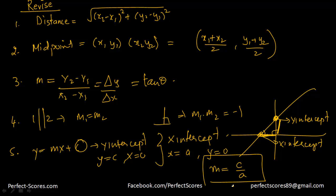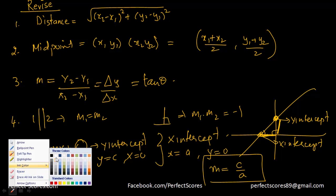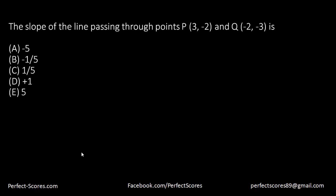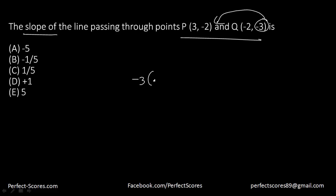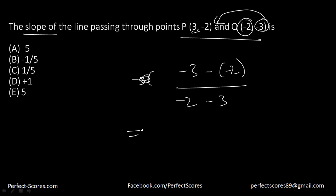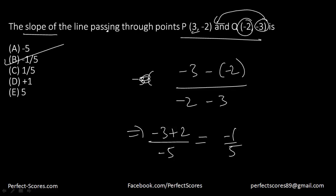Let's move to the questions. The first question asks for the slope of the line passing through two points. That would be y2 minus y1 over x2 minus x1, which equals negative 3 plus 2 over negative 5, giving negative 1 over 5.